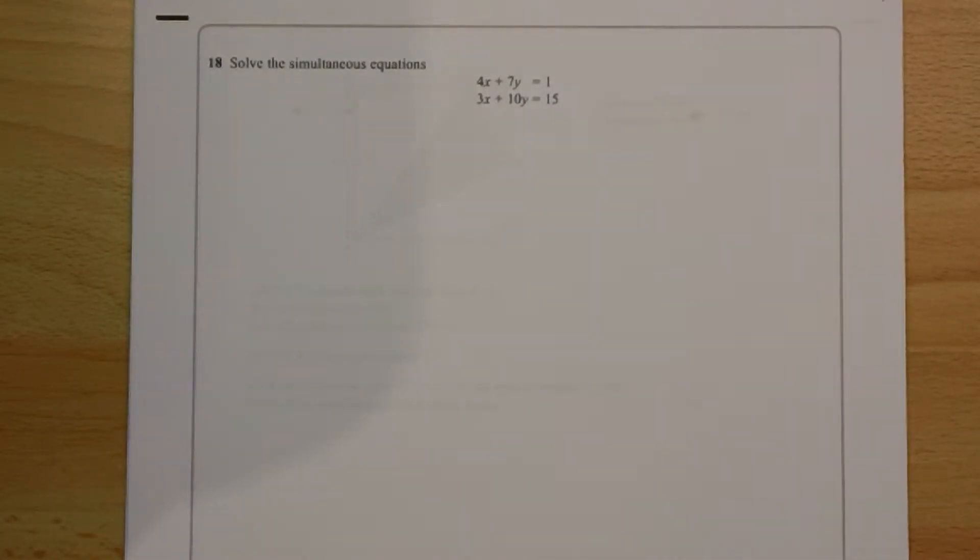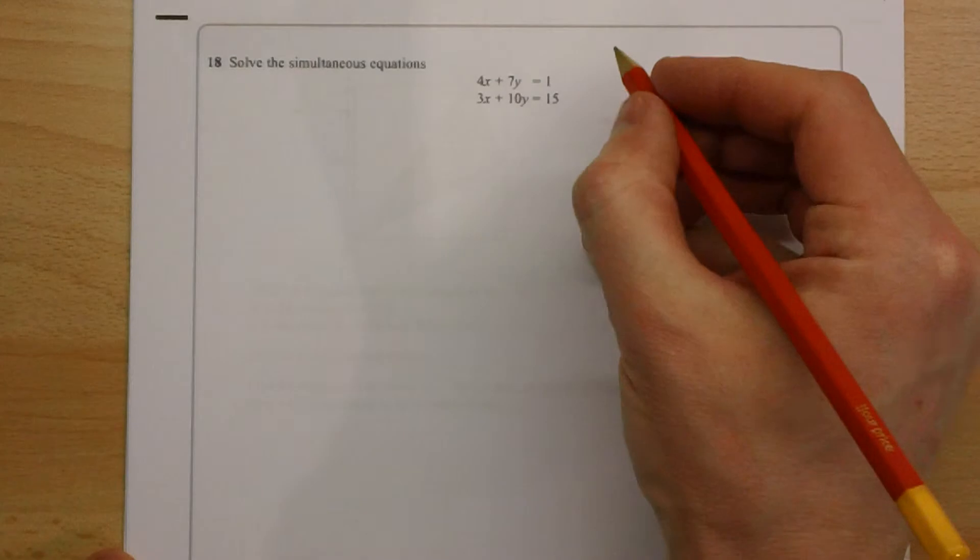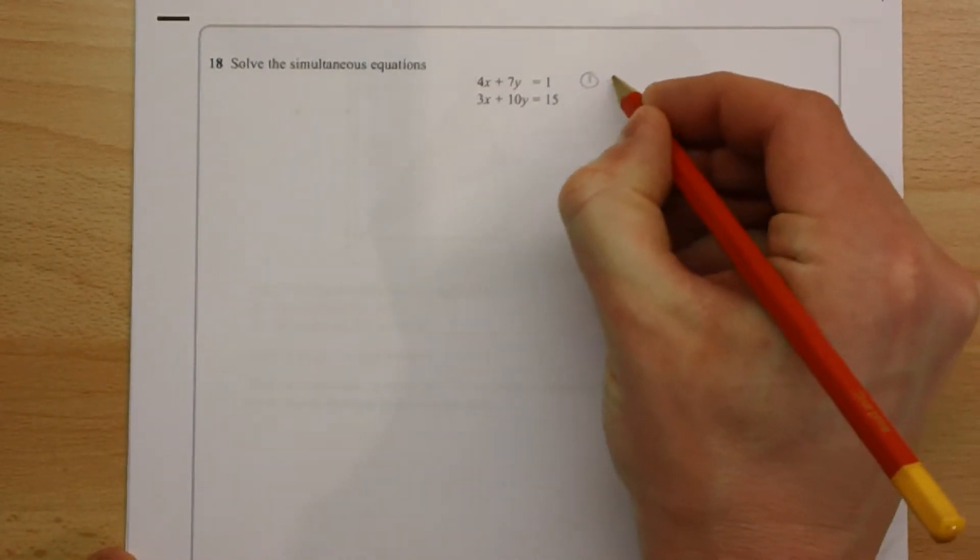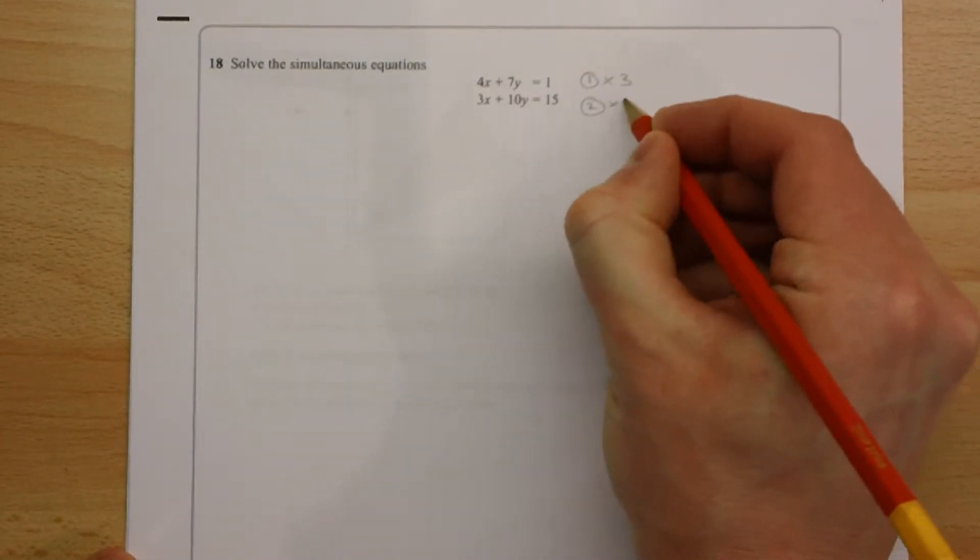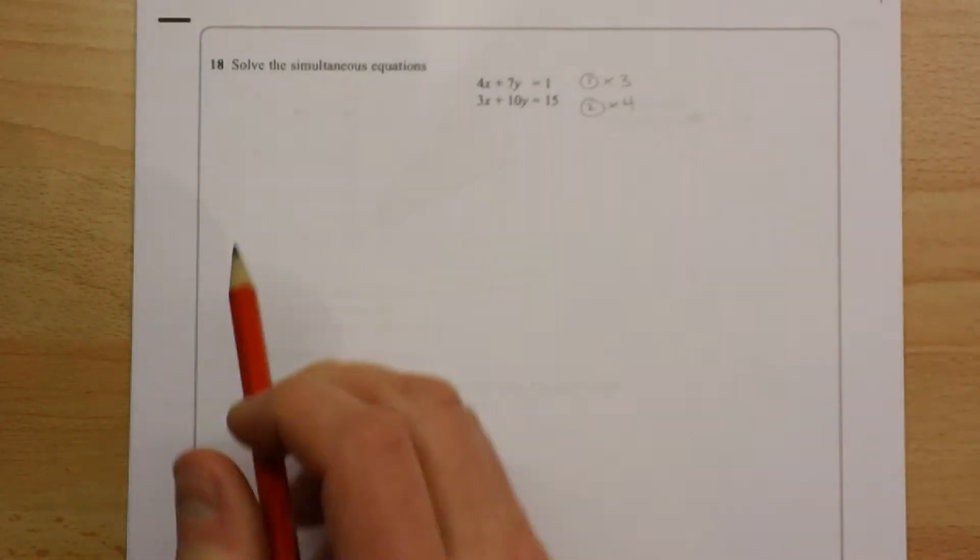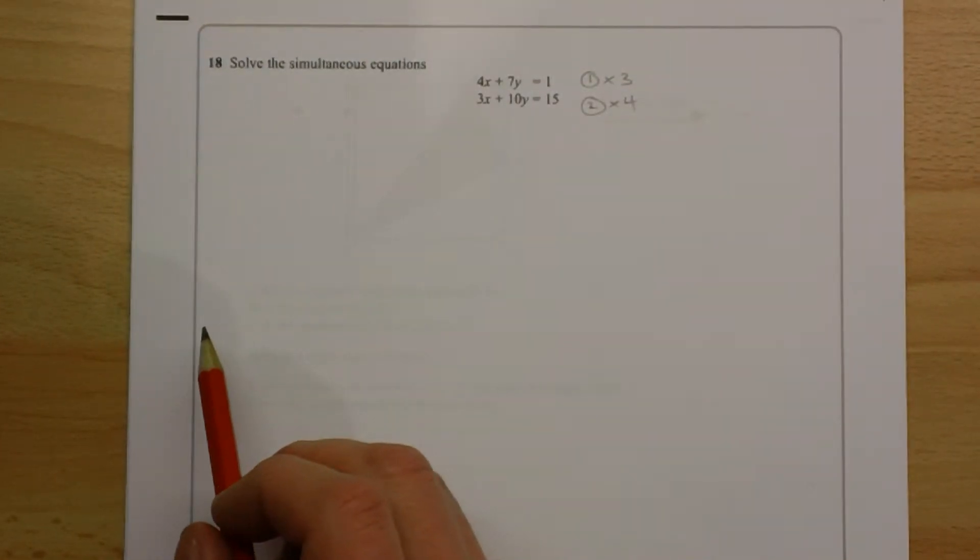So the first thing we need to do is we need to change both equations in this case. So we've got the same number of x's or y's. I'm going to do it by multiplying the top equation by 3 and the bottom equation by 4, and that will give me the same numbers of x's in the top and bottom.